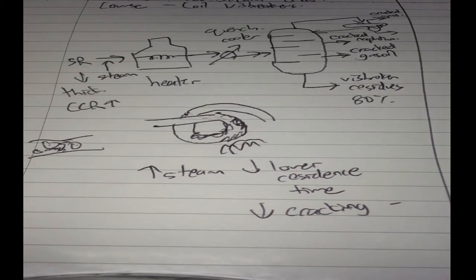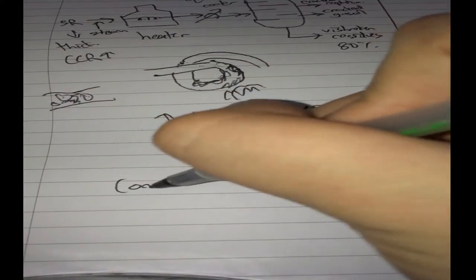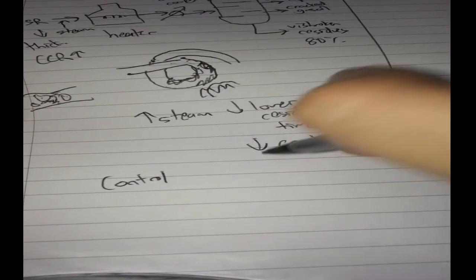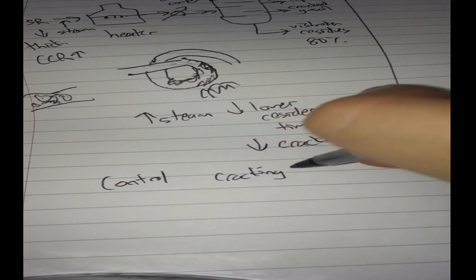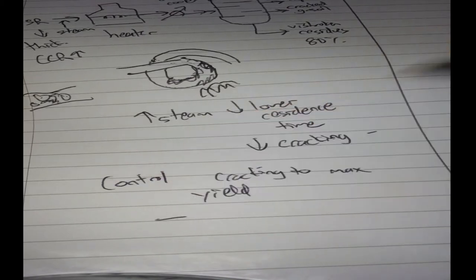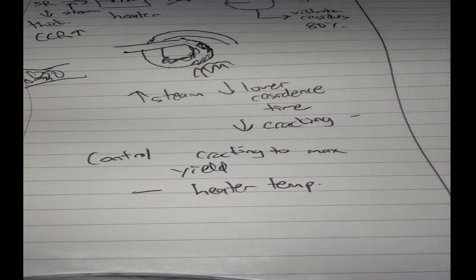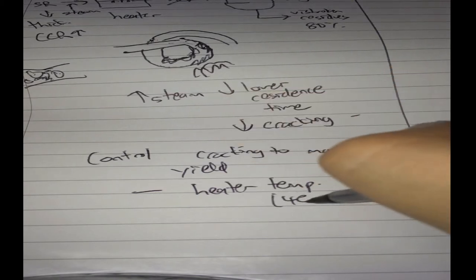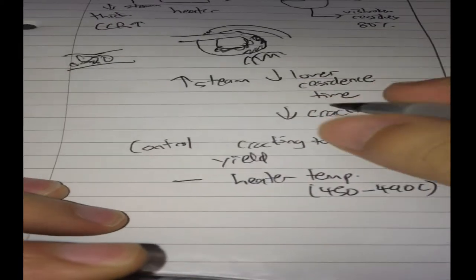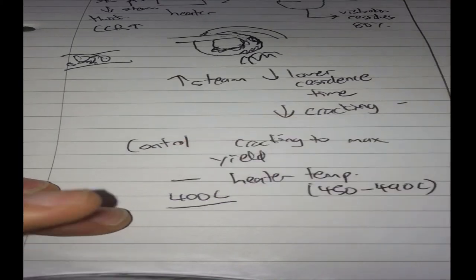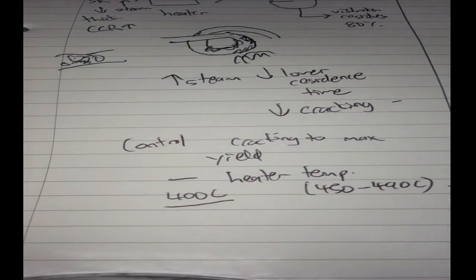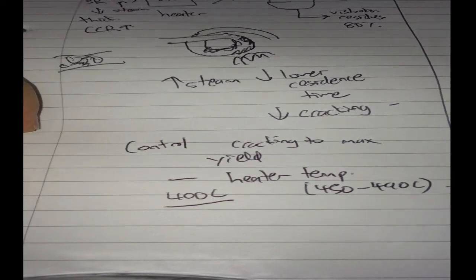So to maximize yield, one can control the heater temperature. If you want to maximize how well you so-called crack your oil, the cracking to maximize yield, here you can control the heater temperature. And for this particular unit, you have about 450 to 490 degrees Celsius, because cracking starts to happen at 400 degrees Celsius. But you need to have enough of that cracking so that you can crack your vacuum residue or short residue enough, so they elevate the temperature just a little bit more.